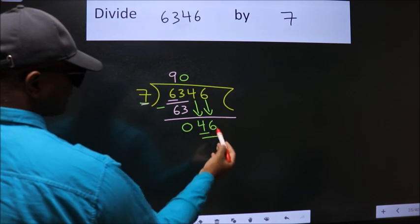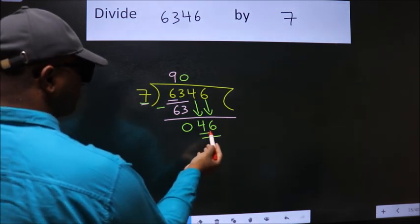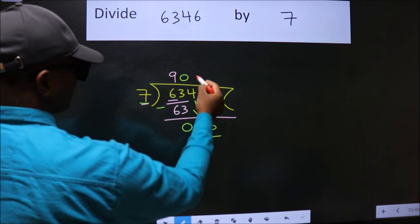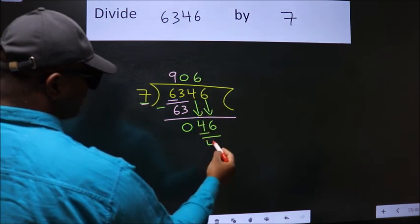So 46. A number close to 46 in 7 table is 7 times 6, 42.